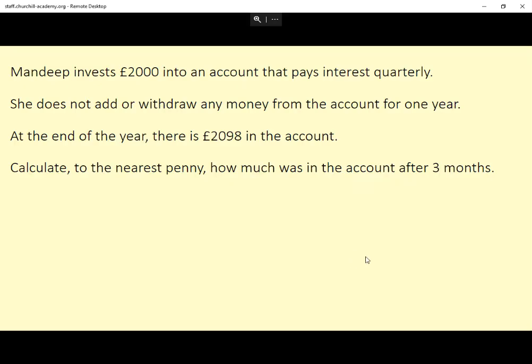So there's quite a lot going on here, only four lines of text. The second line is important but we can largely ignore it. She doesn't add or withdraw any money from the account for a year. Good, that would make things incredibly complicated if she did, so we can sort of ignore that bit really. But £2,000 has gone up to £2,098 and it's been in for a year, so let's start with that.